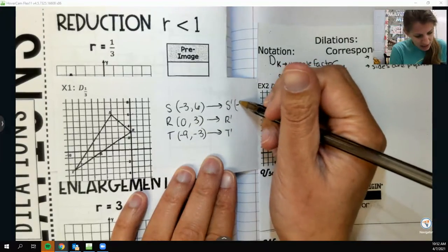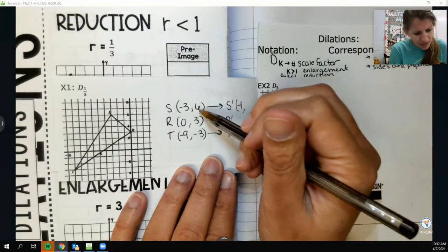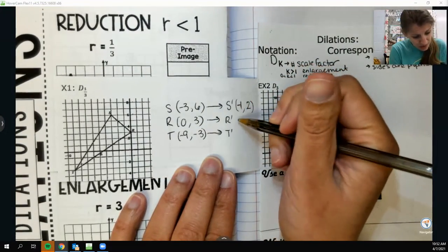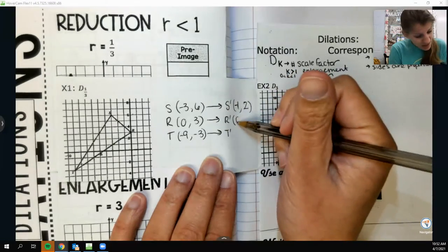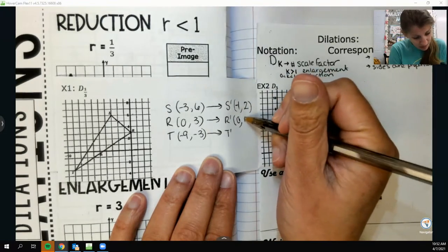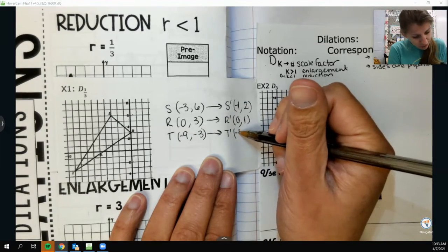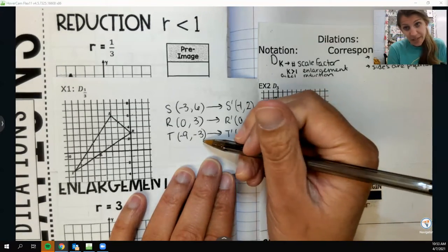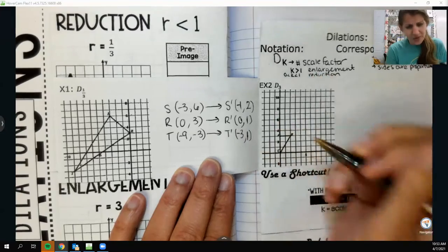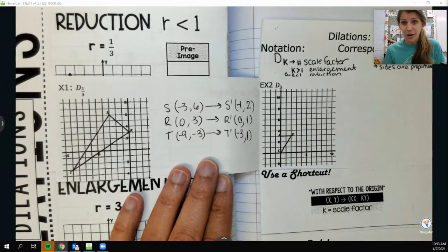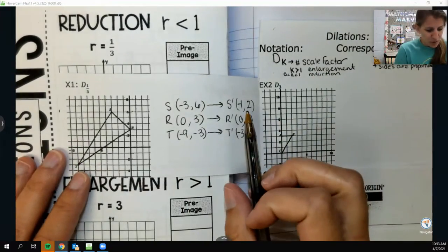So I write down my points. So this triangle here is SRT and S is at negative 3 comma 6 and R is at 0 comma 3 and T is at negative 9 comma negative 3. Now, they've told me that I am going to do a dilation of 1 third. So because I'm between 0 and 1, like I'm fractional, less than 1, I know that this triangle is going to shrink. So it's going to be a reduction.